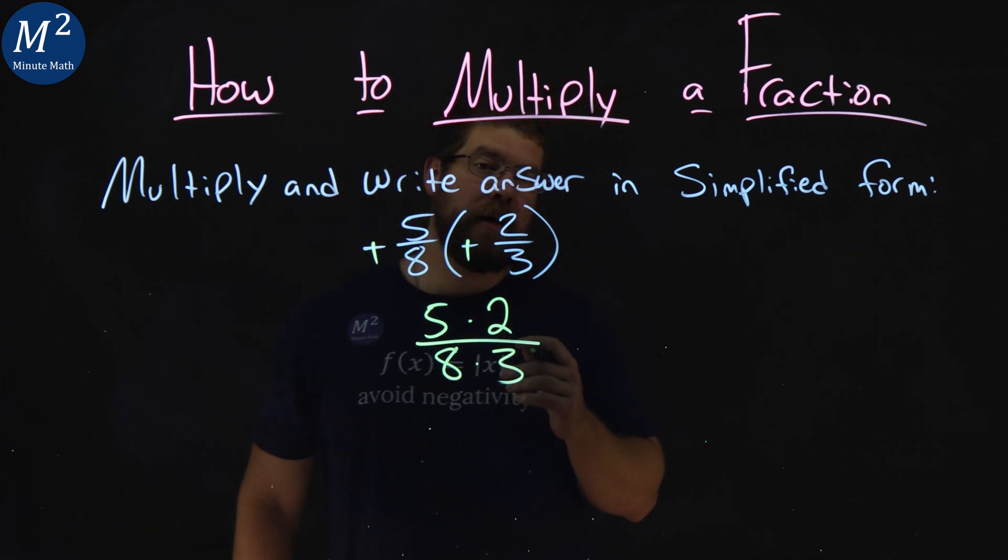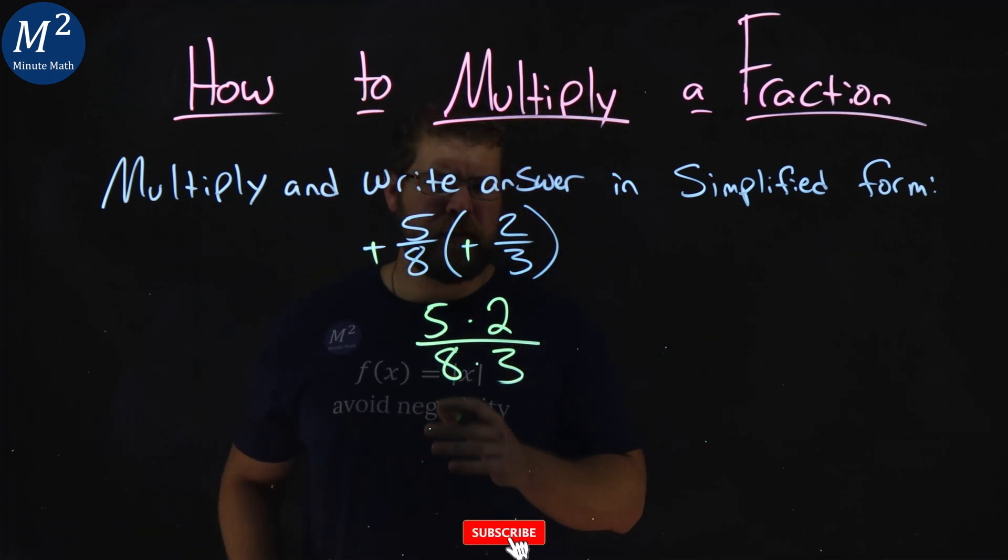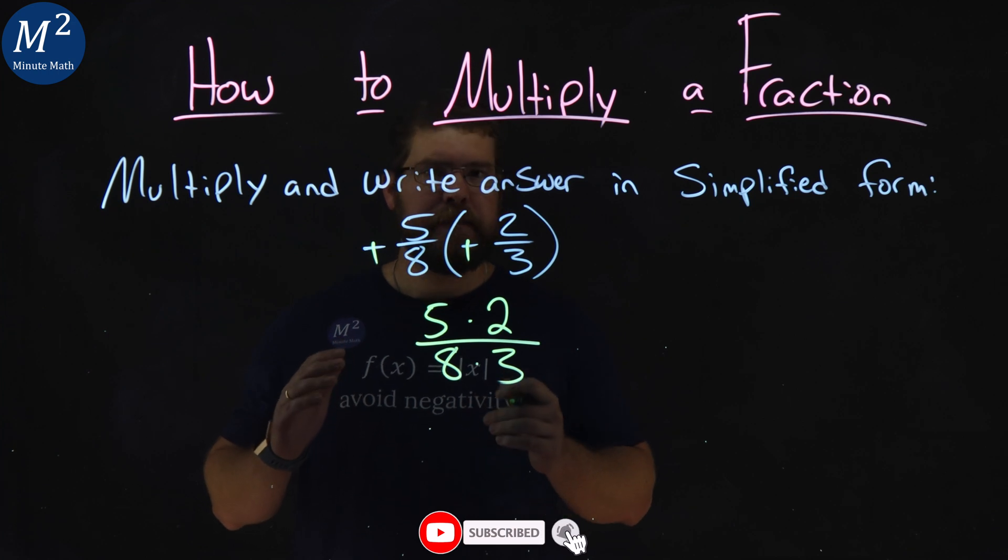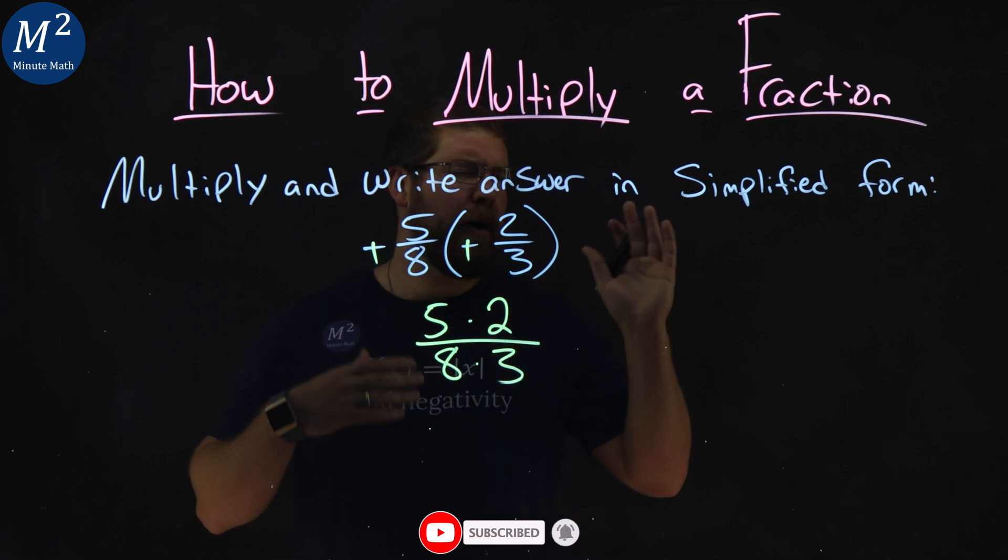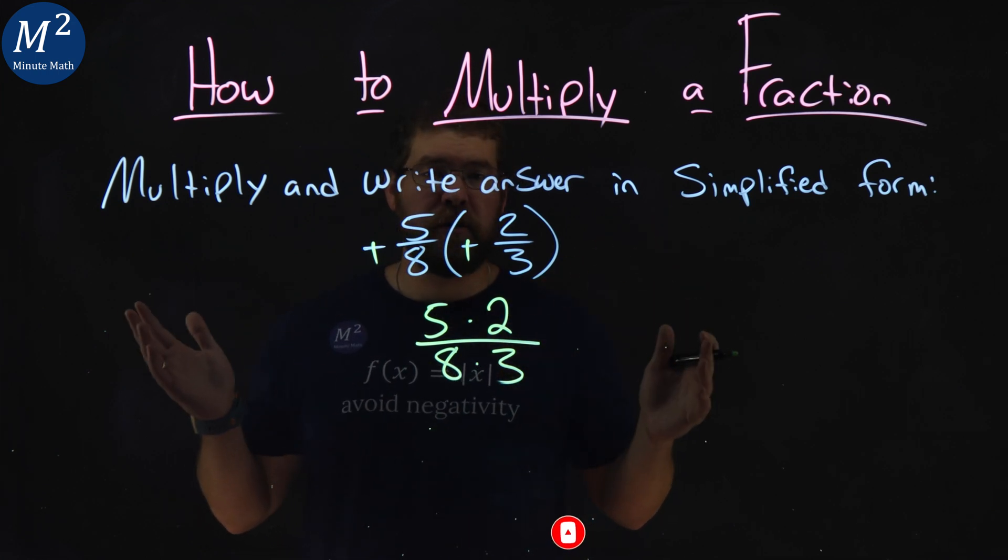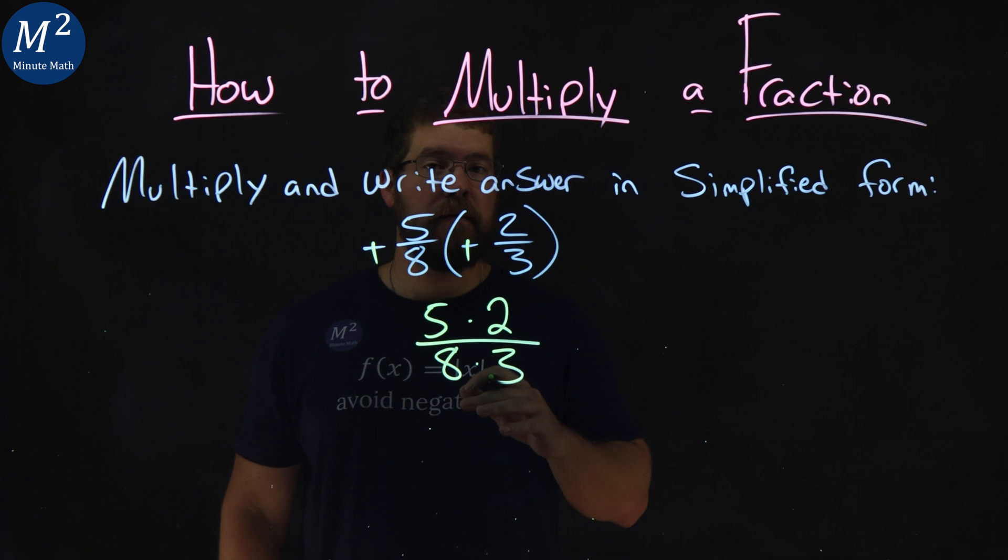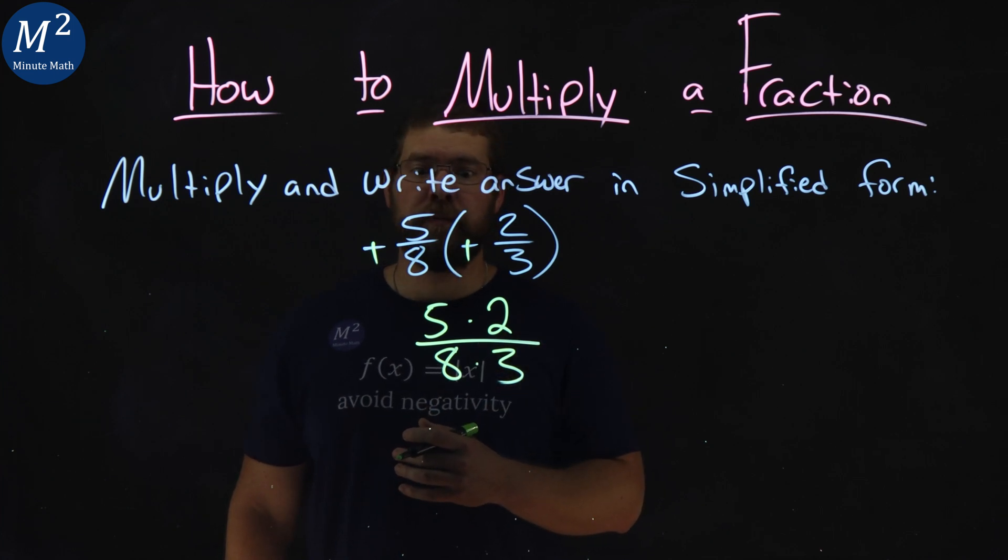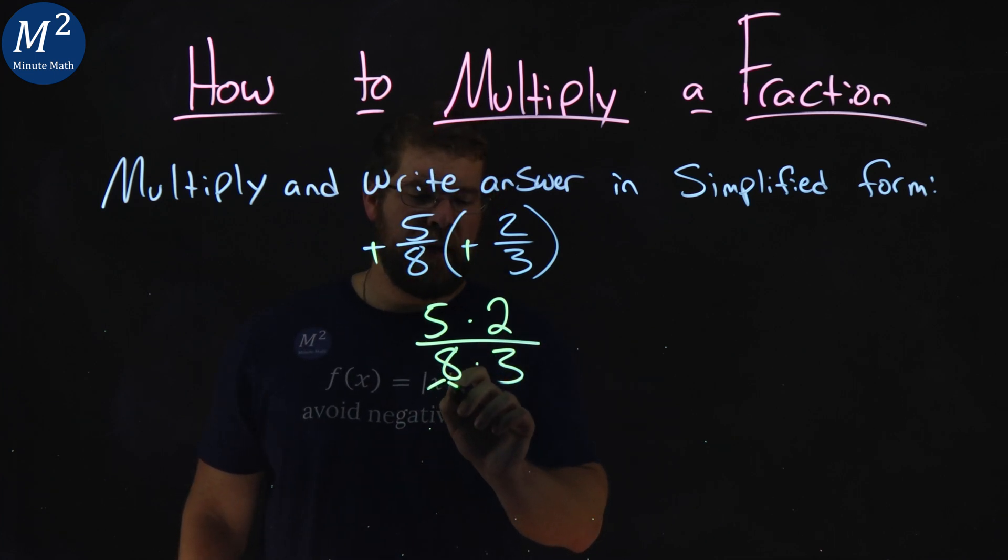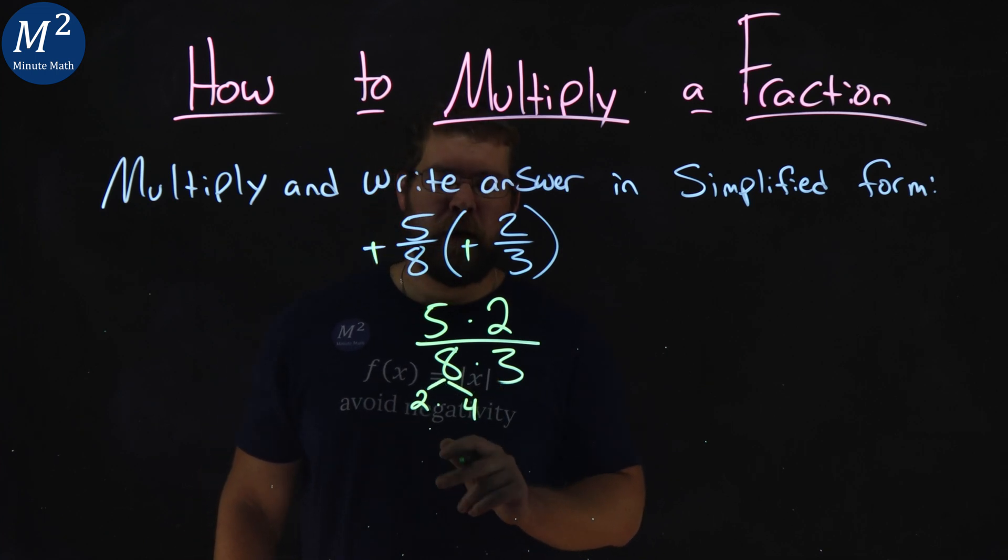Now we want to see if we have any common factors, and this is where it gets a little dicey. Some people like to multiply this straight out and then break down, but I already see this partially broken down. I see a 2 in this numerator, and the 8 is an even number, meaning it is divisible by 2. So 8 can be broken down to be 2 times 4.